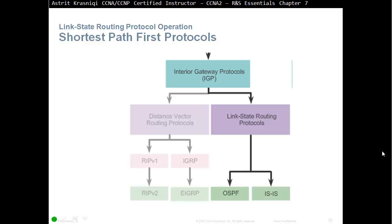If you remember the difference between link state routing protocols and distance vector — distance vectors are kind of like routing by rumor, whatever the neighbor is telling them. For example, they might say the destination ABC is five hops away in the direction of FA0/0. With distance vector protocols, you run the risk of getting a routing loop, as the routers don't really see the whole topology and don't know if what the neighbor is telling them is true — maybe the neighbor has been misinformed.